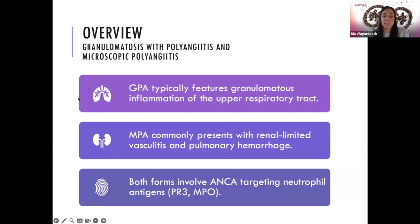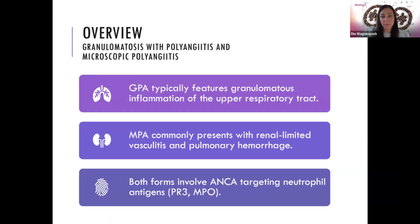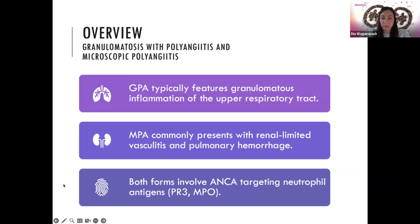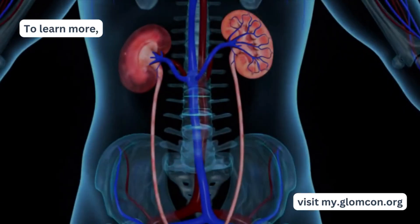What are the key points we need to remember when distinguishing between granulomatosis with polyangiitis and microscopic polyangiitis? GPA typically features granulomatous inflammation of the upper respiratory tract system, while MPA commonly presents with renal-limited vasculitis and pulmonary hemorrhage. Both are going to involve ANCA targeting.